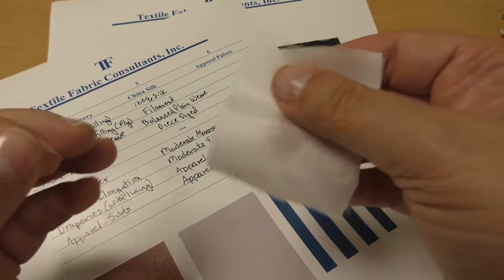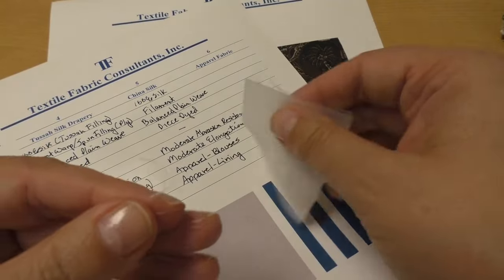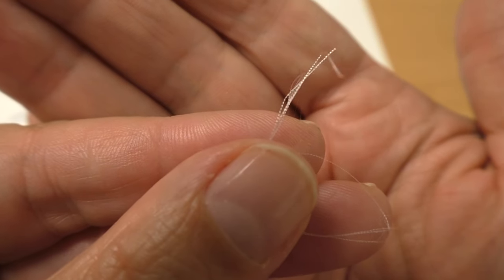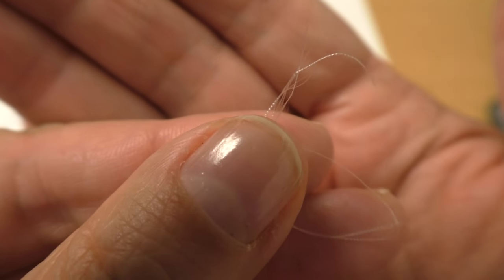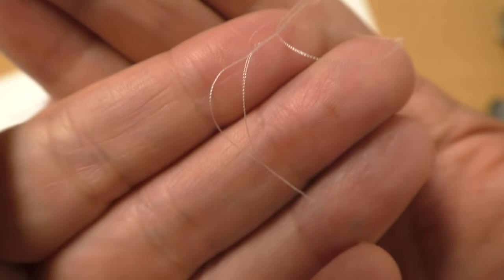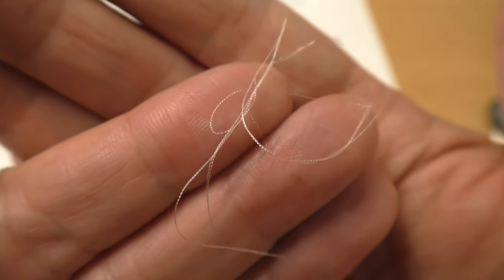When I pull out one of the yarns, in this case that was a warp yarn going in the long direction, can you see how shiny that is and how no fiber ends are sticking out of the side? Although silk can be cut up to be a spun yarn, in this case this is definitely a filling yarn.